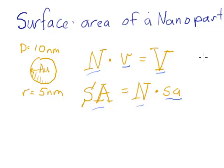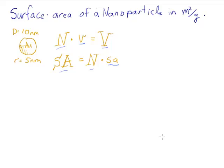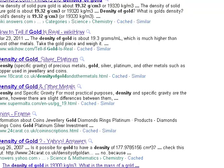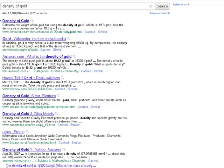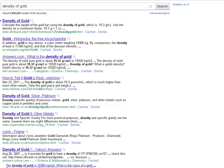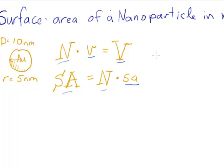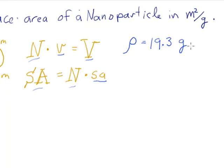If I look up onto the internet, I can find the density of gold, and it is 19.3 grams. So just looking up on the internet, I found a site that had the density of gold equals 19.3 grams per cubic centimeter.